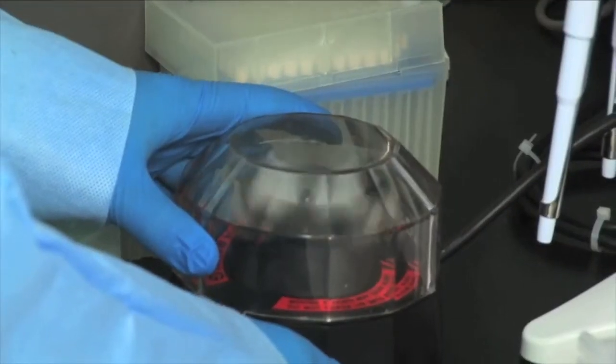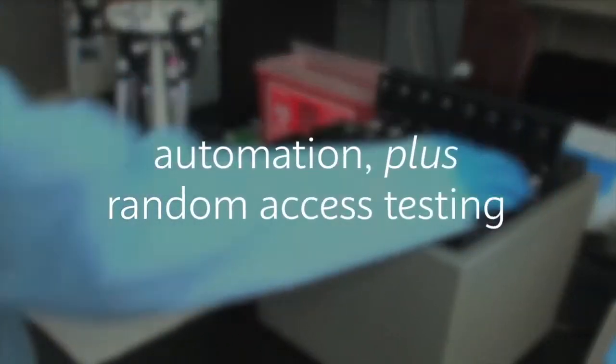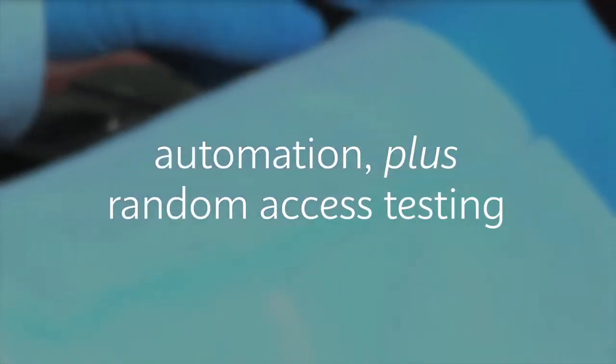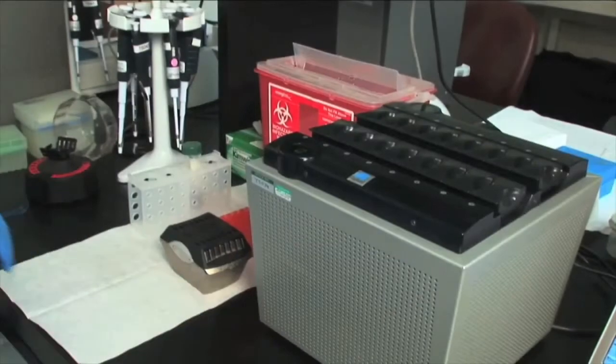Introduced in 2000, Cepheid's first product, the Smart Cycler system, delivered automation and random access testing to the market, a first for a real-time PCR system.